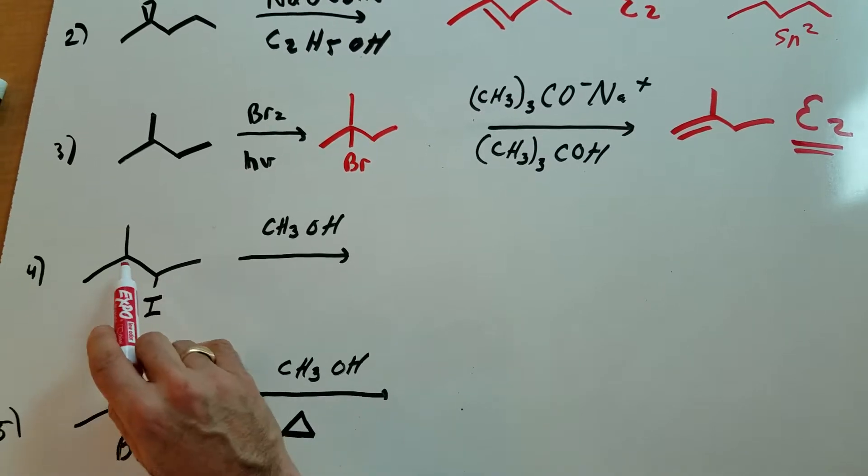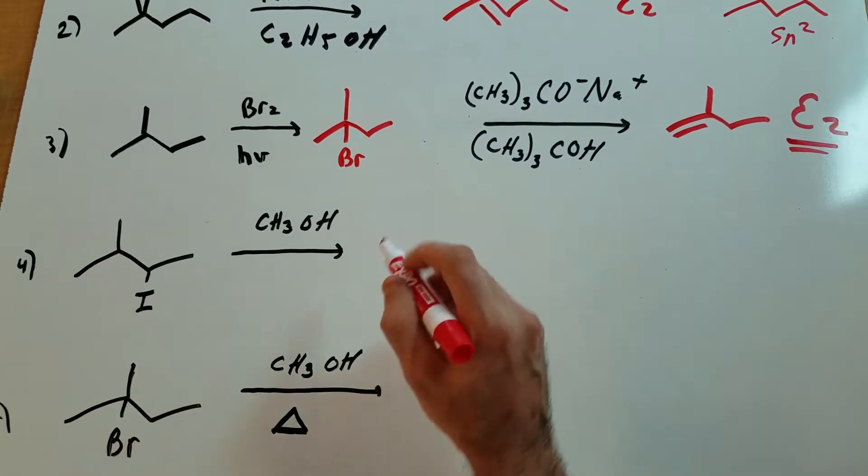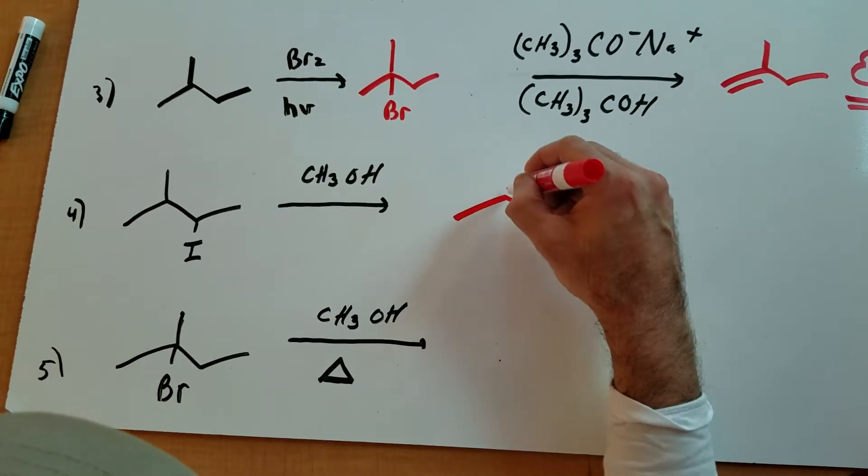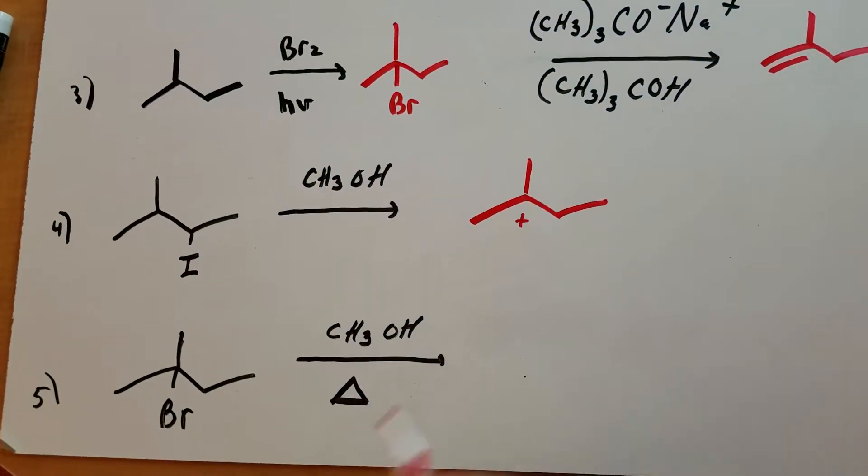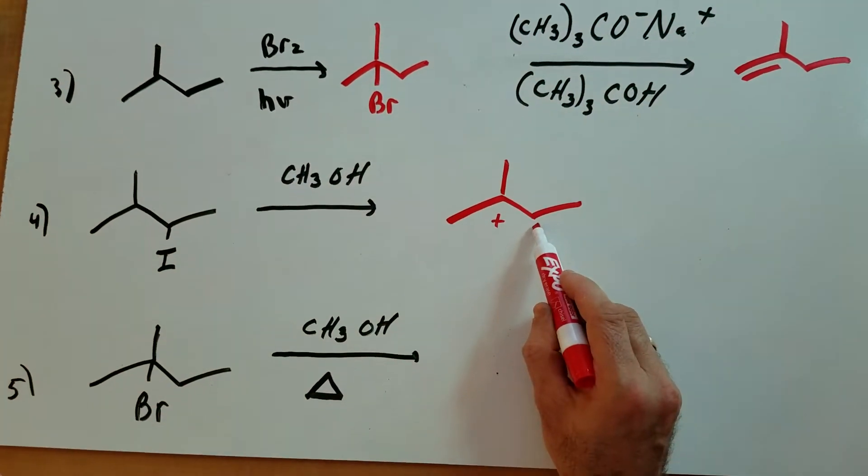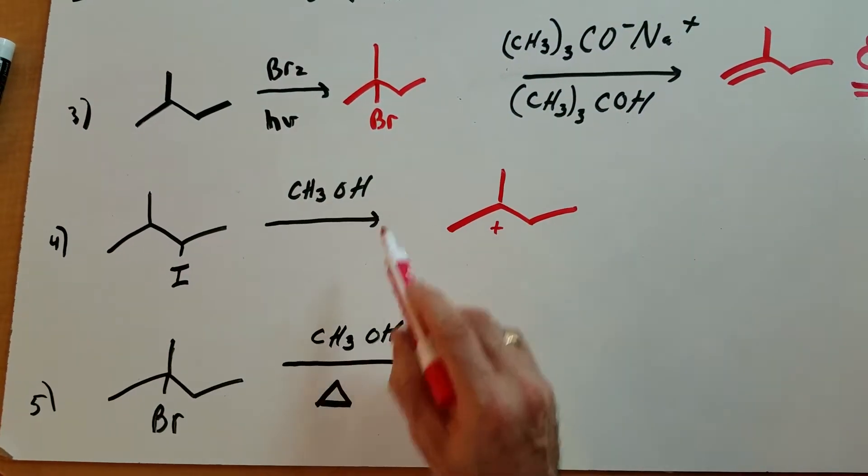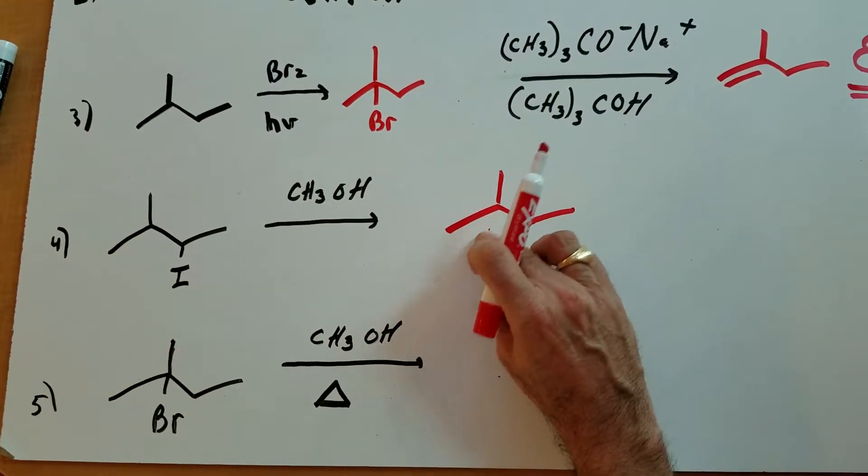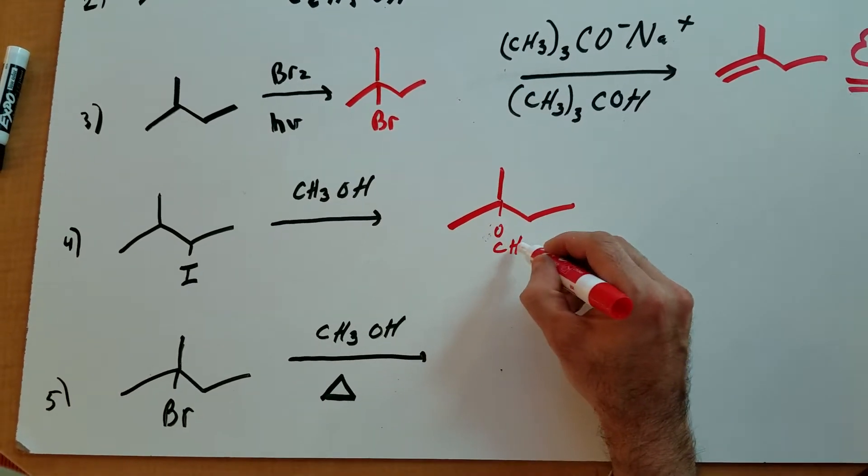If you form that intermediate carbocation, I hope you can realize that you would put a plus charge at this position. And if we did a shift, we take a hydrogen and we moved it over, you would end up with a rearranged carbocation that would look like this. So the iodine left, put a carbocation here, we did the shift, we got a tertiary, the nucleophile comes in and captures this, and we would get this.